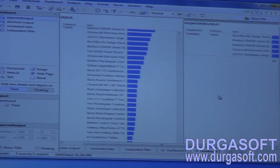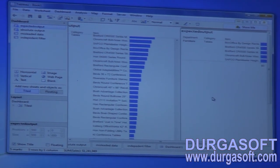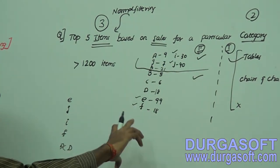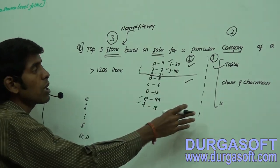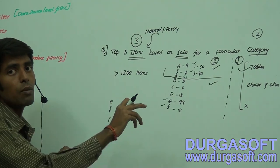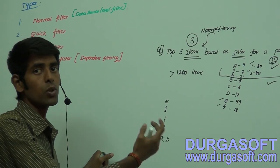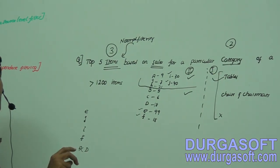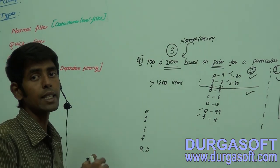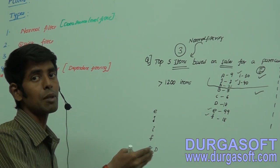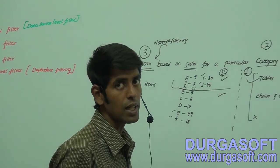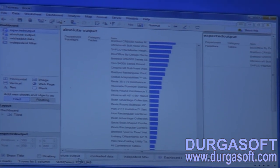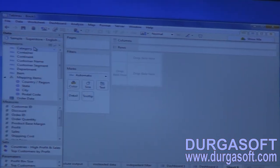Now let me show another scenario: selecting two categories — tables and chair mats. Each category has a set of items. If I apply context filtering, how many records should we get? Only five — but those five records can be spread across both categories. We want the top five items from these two combined categories based on sales. Let me analyze this to make you aware of the behavior.